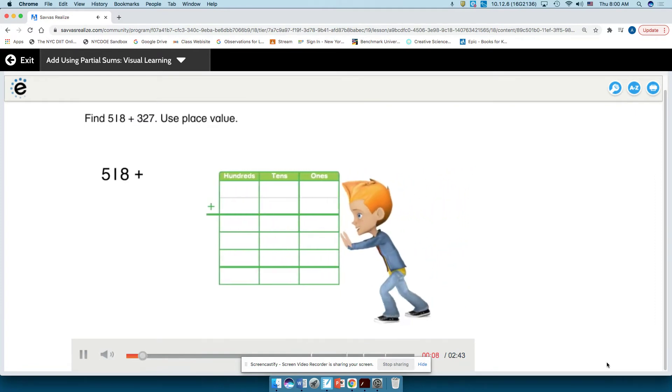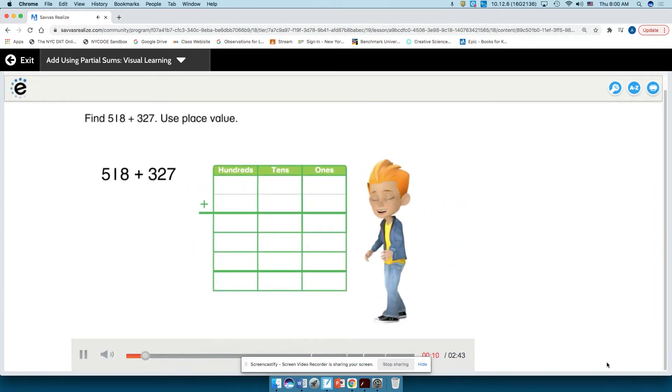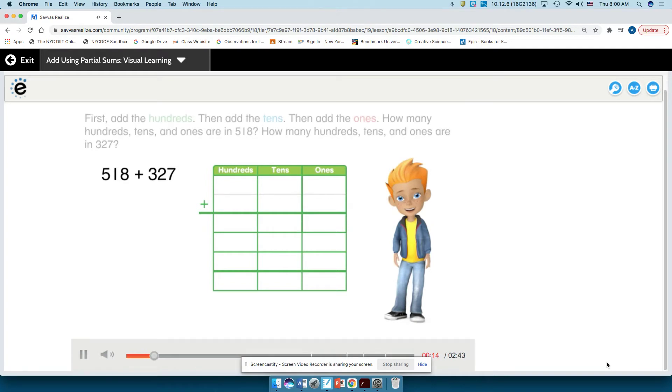Find 518 plus 327. Use place value. First, add the hundreds. Then add the tens. Then add the ones.